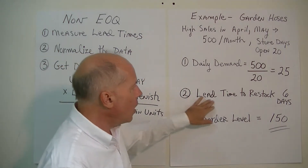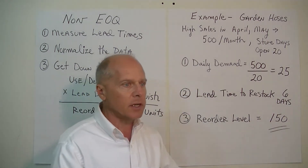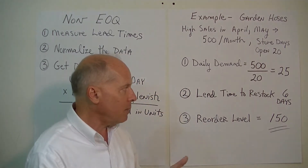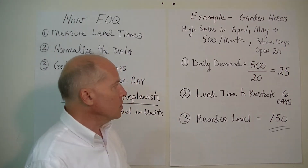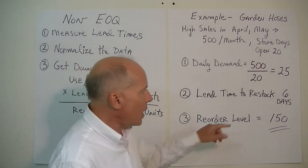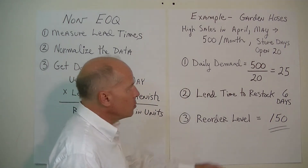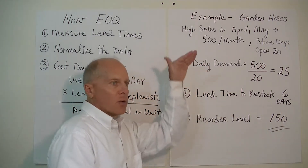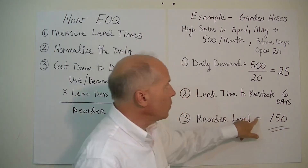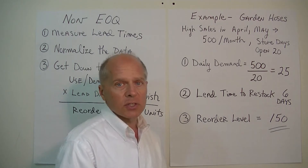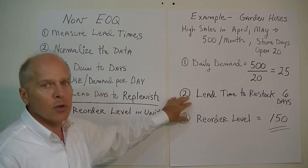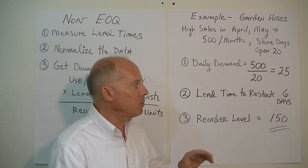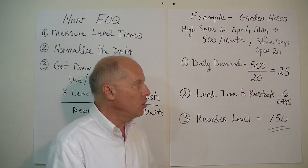When we place the order, the truck drops it off, we scan it into the inventory system, check for damage, and the stock clerk puts it on the shelf — all of that takes six days. So 25 times 6 equals 150 units. When the inventory level gets down to 150, that's when we need to place an order to replenish the garden hoses. This is what you should do when the EOQ model doesn't apply, to order at the right time, meet demand, and minimize costs.